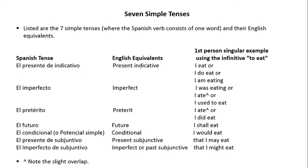Note that there's a caret next to 'I ate' for both the imperfect and the preterite. That indicates that there is a slight overlap in the usage.